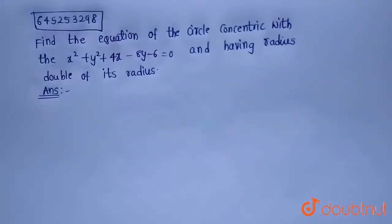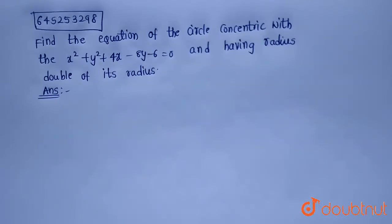Hello everyone. Today's question is: find the equation of the circle concentric with the circle x² + y² + 4x − 8y − 6 = 0 and having the radius double of its radius.